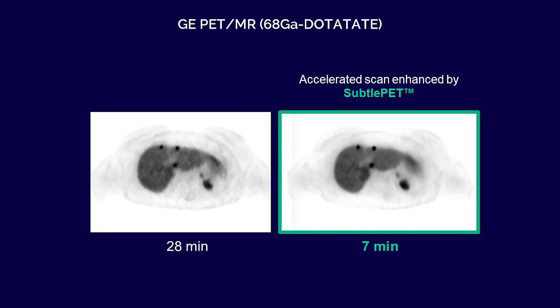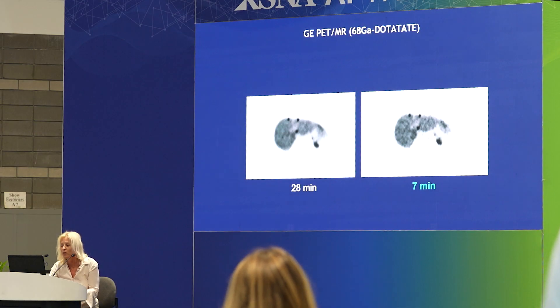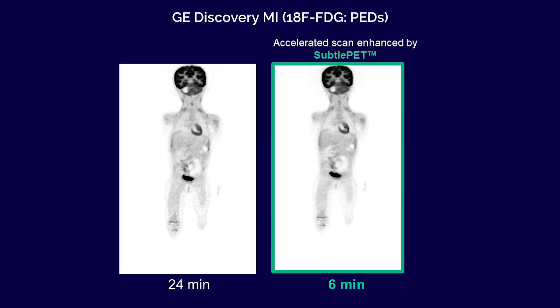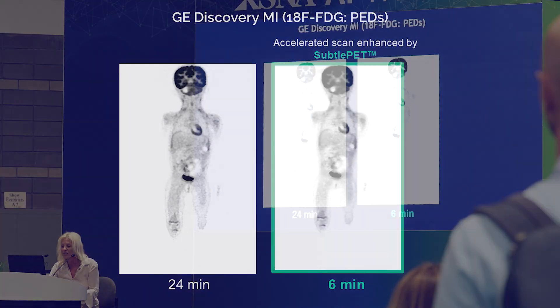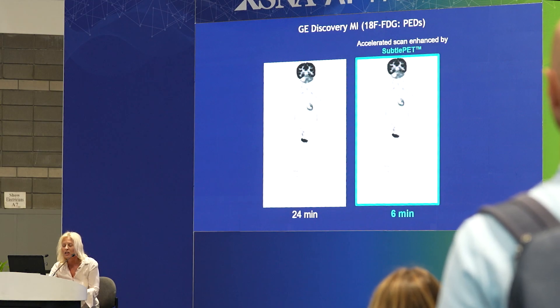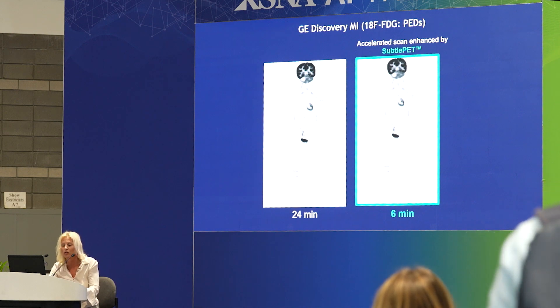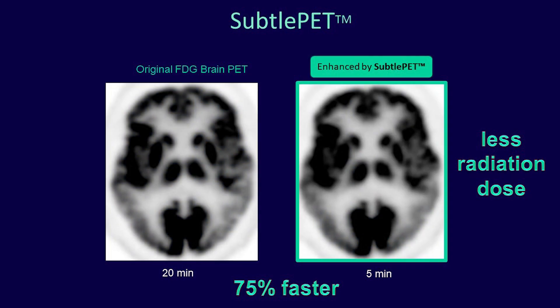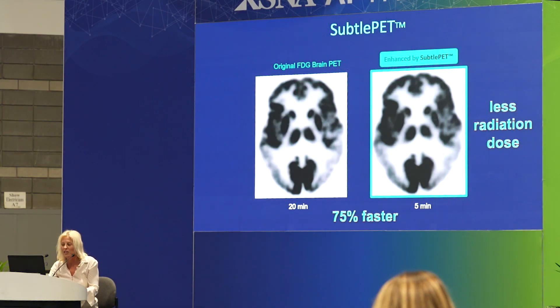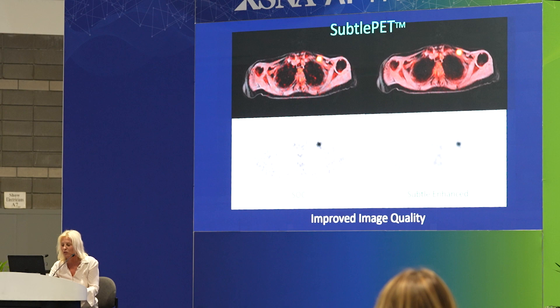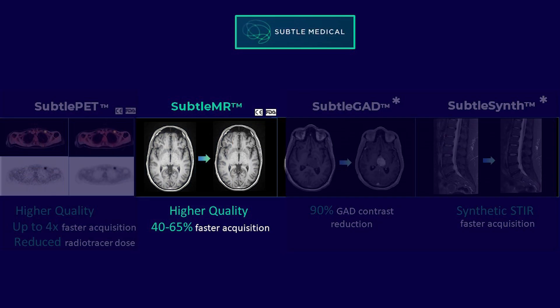Here's another exam — it took 28 minutes, altering the protocol to get it down to seven and then restoring the image quality with deep learning. Here's a pediatric patient, 24 minutes — you can get this exam down to six minutes and then restore image quality. You can see why this would be very helpful in the pediatric population, as it's hard for children to hold still for this long. Here's an FDG brain PET CT — we went 75% faster with less radiation dose but can maintain image quality. Standard of care on the left and the Subtle enhanced on the right in this patient with a metastasis — really improved quality here.